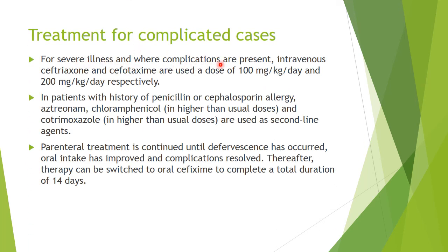For severe illness with complications, intravenous ceftriaxone is used at a dose of 50–75 mg/kg/day (or up to 100–200 mg/kg/day in some references), or cefotaxime at 100–150 mg/kg/day. For oral continuation, ceftriaxone is given 1 gram twice daily. In patients with a history of penicillin or cephalosporin allergy, aztreonam, chloramphenicol in higher doses, or co-trimoxazole in higher doses are used as second-line agents. Parenteral drugs are continued until defervescence (fever disappears), oral intake improves, and complications resolve. Then oral drugs such as oral cefixime are given, and the total therapy duration is 14 days.